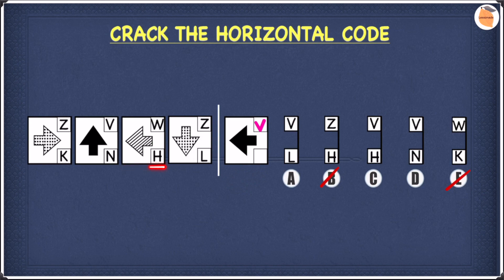When the arrow is pointing towards the left, the bottom letter is H. So our answer for this question is VH. We can cross off A and D, and we're left with C. So our answer to this question is C. I hope you understood everything so far — now let's go on to the next one.